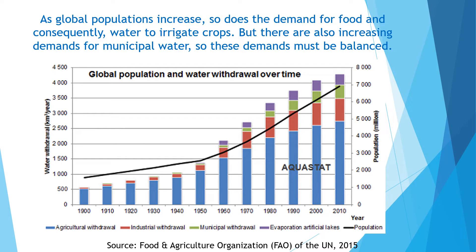The bar charts on this slide demonstrate a couple of points about global water use. First, the blue part of the bar is the largest, indicating that most water extracted and consumed globally is for agriculture or growing food — about 75% of water use. Industry, the red part of the bar, followed by municipal or public use in green, are the next largest. Second, all types of water use are growing globally because the human population is growing, and these curves mirror population growth shown as the black line.